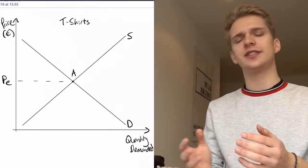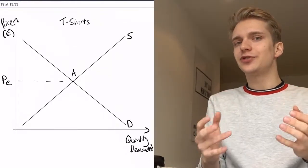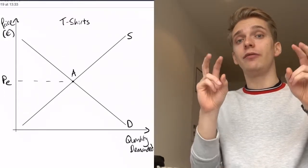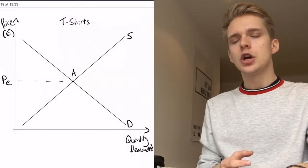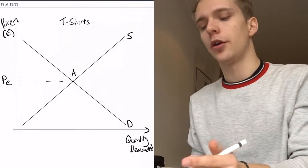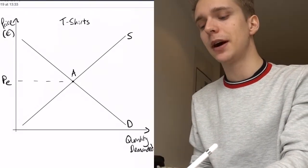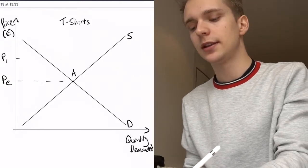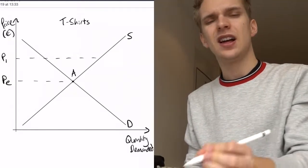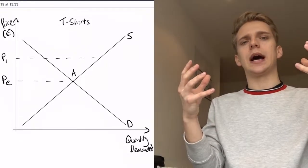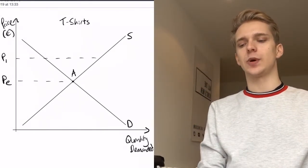Now what's so interesting about an equilibrium? Well, one of the most interesting things is that it's self-righting. Suppose the price is at some other price level — instead of being at the equilibrium price, it might be up at P1. Let's suggest the price is all the way up here, meaning the price of t-shirts is quite high.